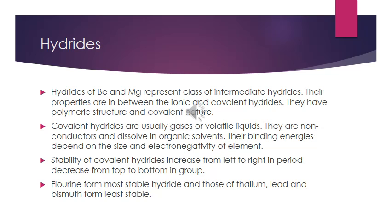Regarding stability of covalent hydrides: in periods, stability increases from left to right, while in groups, stability decreases from top to bottom. Therefore, fluorine forms the most stable hydride, while thallium, lead, and bismuth form the least stable hydrides.